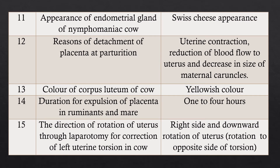Question 11: Appearance of endometrial glands of a nymphomaniac cow. Answer: The endometrium looks like Swiss cheese, so it is called the Swiss cheese appearance.